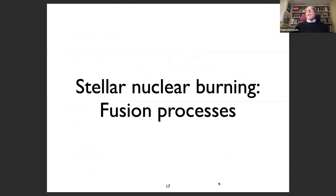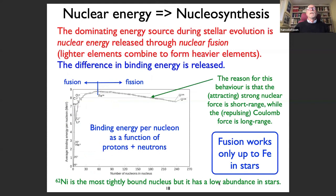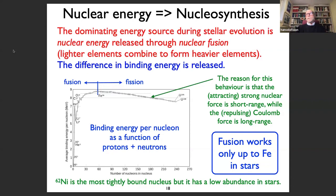Let's look at stellar nuclear burning and the fusion processes responsible for it. Nuclear burning in a star drives stellar evolution through nuclear energy release via fusion — lighter elements combine to form heavier elements and the difference in binding energy is released. This figure shows the binding energy per nucleon as a function of protons plus neutrons in the nucleus, with a division line near iron.